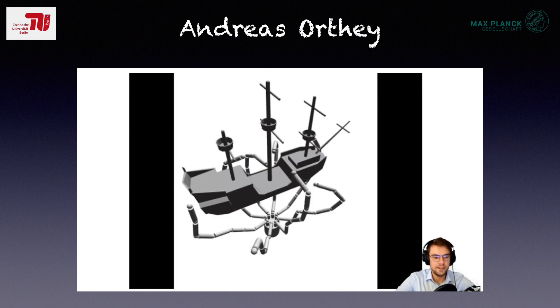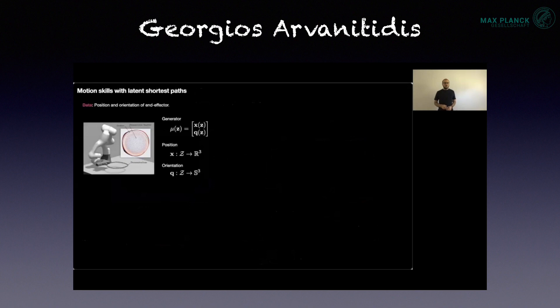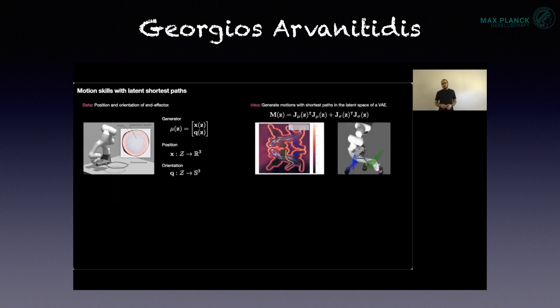Georgios Arbanitidis: We apply this theory to robots. We have the robot, we collect as data the position of the end effector and the orientation. What we can do is train a model and then use simply the pullback metric in the latent space to compute geodesic paths between two states.